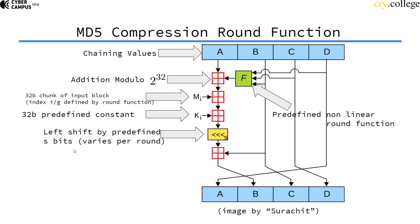Another thing to notice here is the predefined nonlinear round function that adds all the chaining values together to this 32-bit value. In the end, these values are scrambled around, and that's one round of the round function that consumes 32 bits of the input message and a 128-bit chaining value.